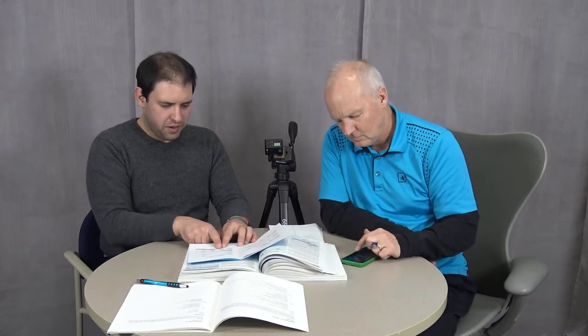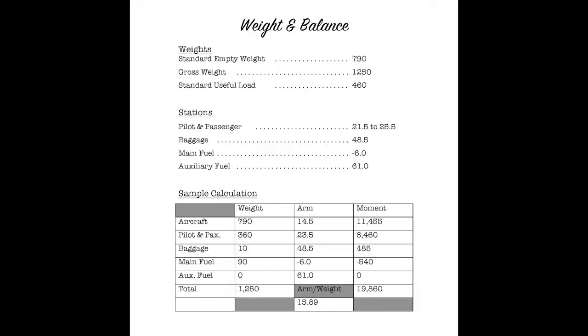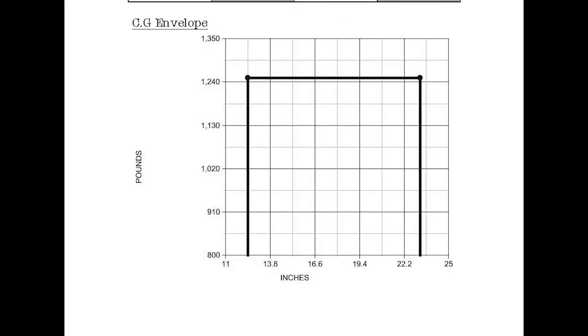Which is what we have here. If you divide that by 1,250, we get 15.86, which if we look at our envelope here for the center of gravity, is pretty much right in the middle forward and aft. We're right up at the top because we're at gross weight.